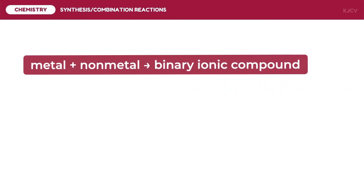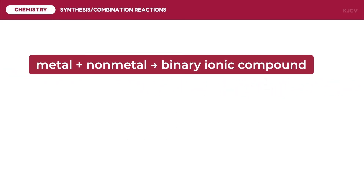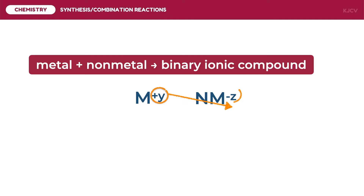The first synthesis reaction is the reaction between a metal and non-metal to produce a binary ionic compound. Both reactants are free elements, meaning they are not paired with any other element, but as they form a product they will form a binary ionic compound through the crisscross of charges. The charge of each element will be the subscript of the other element.